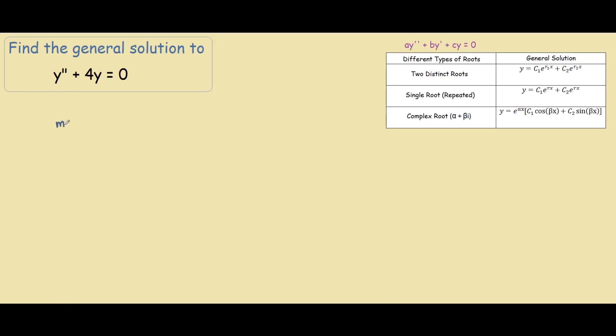So we have m² + 4 = 0. All we did here was look at the magnitude of the derivative. So here we have the derivative to the second power, so we have a squared. And over here we have no derivatives, so we just ignore it.